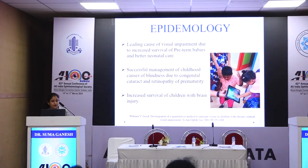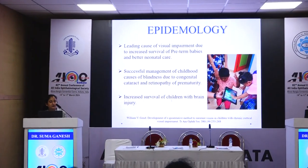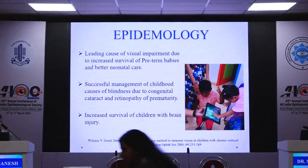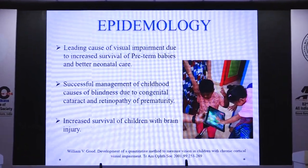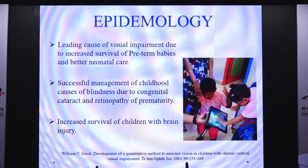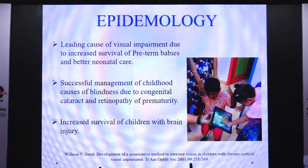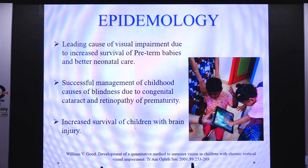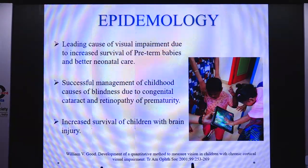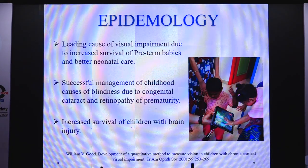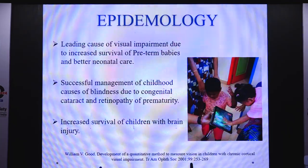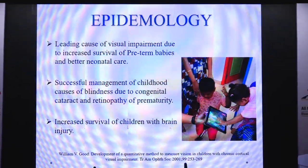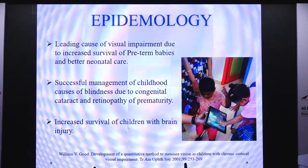CVI is one of the leading causes of visual impairment due to increased survival of preterm babies and better neonatal care. Successful management of childhood causes of blindness due to congenital cataract and retinopathy of prematurity, and increased survival of children with brain injury, has resulted in a rise in such cases.